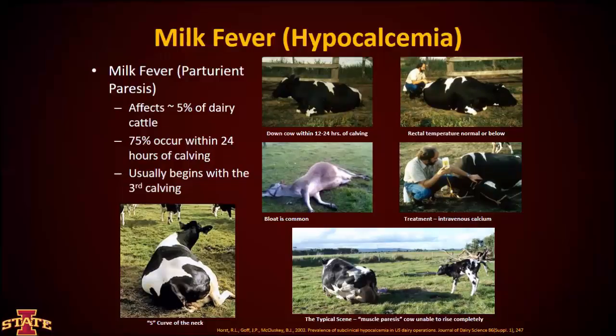Milk fever is one of the most common conditions that occurs in dairy cattle. It affects somewhere between 5% or less of dairy cattle, and 75% of these conditions occur within 24 hours of calving — oftentimes right after calving, but it can occur prior to calving as well. In my experience and that of many others, this usually begins with the third calving. As a practitioner, when I'd get a call about a cow being down, I would always ask if it was a heifer or an older cow. When they told me it was an older cow, I could be pretty sure the condition was quite likely milk fever or another associated complication — something I needed to get to and address pretty quickly.